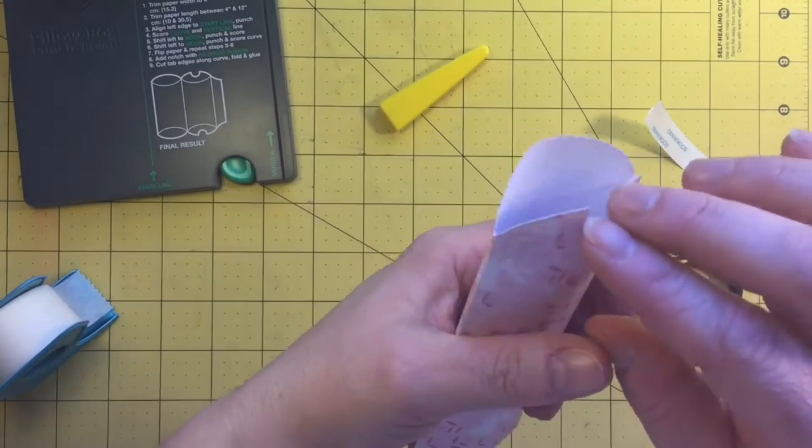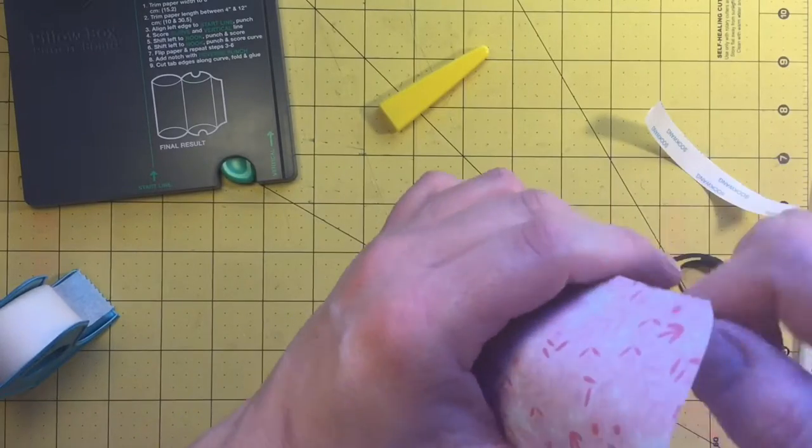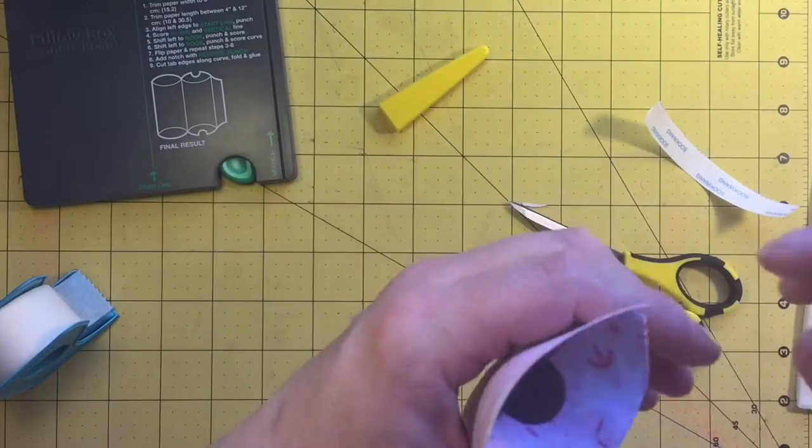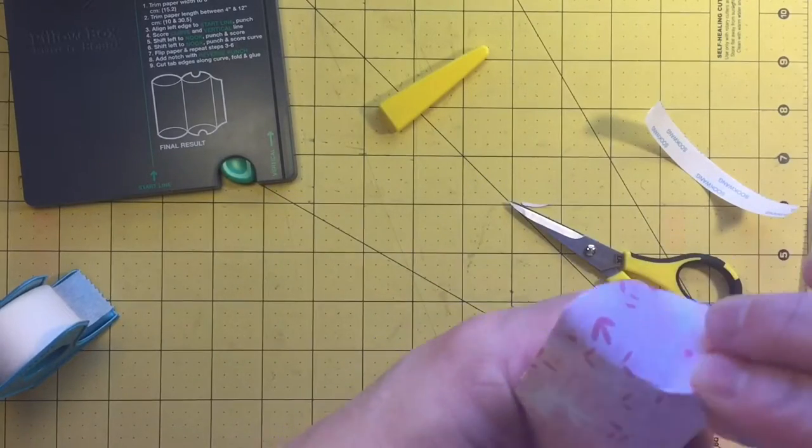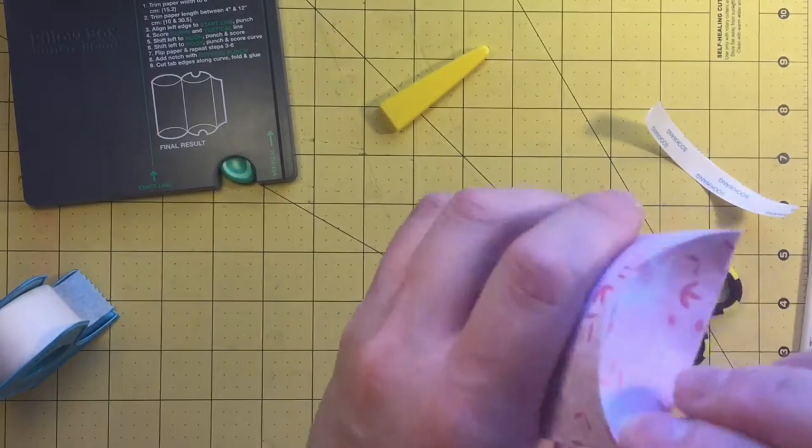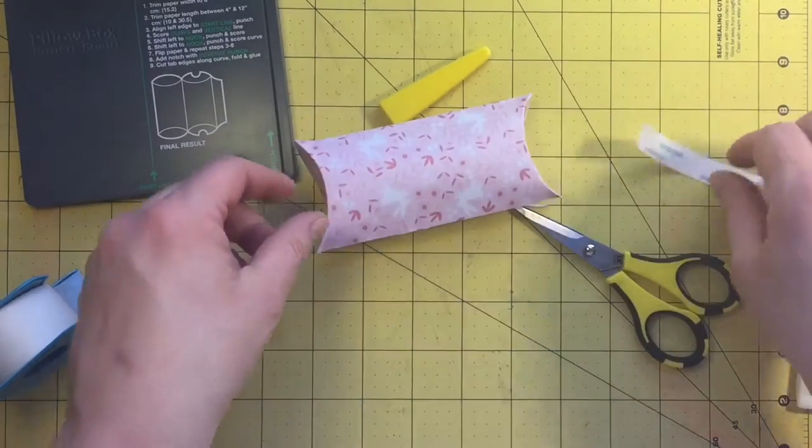I'm going to repeat on the other side. Start with the finger notch side. Fold that in. Gently coax the curved score line. And then fold over the other edge. This one seems to fold up very nicely. Pinch it a little bit at the corners. And there you have your finished pillow box. Now you just need to decorate it.